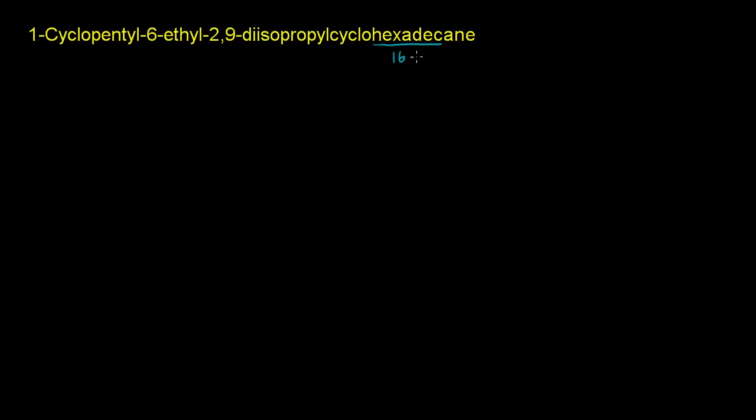So let's start. When you first look at these, it's very daunting, but you always want to start at the end, so you know what the core of the structure is going to be. If you look at the end of this, you have 'ane', so there's not going to be any double or triple bonds — it's all single bonds. It's a hexadecane. Hexadec — that's 6 and 10 — hexadec is a prefix for 16. So this is 16 single-bonded carbons. And it's cyclohexadecane: 16 single-bonded carbons in a ring.